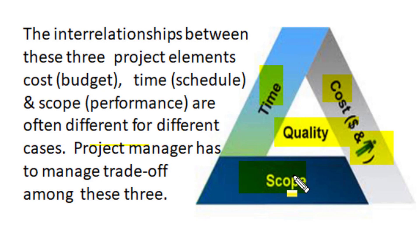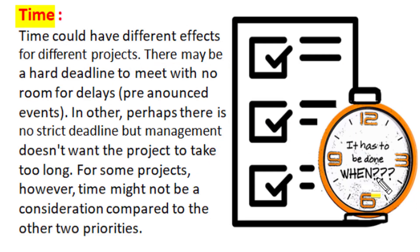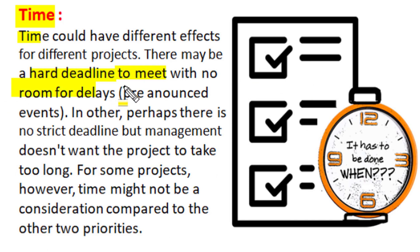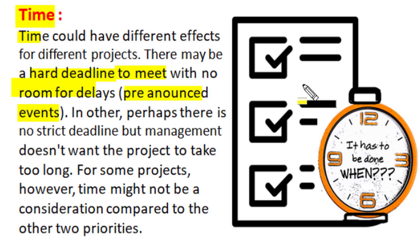Scheduled time or time of completion of a project is an important criteria specified at the time of planning. Some projects have a hard time deadline with no room for delay, such as projects tied to pre-announced events. In other projects, there is no strict deadline but management would not like the project to take too long. For some projects, time might not be an important consideration compared to cost and scope, which may become top priorities.